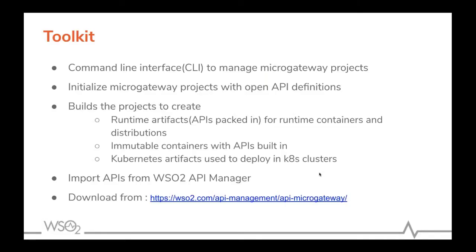The toolkit is a command-line interface for API developers to manage micro gateway projects. API developers can initialize micro gateway projects with standard OpenAPI definitions, then build the project to generate runtime artifacts and immutable containers or Kubernetes artifacts. The toolkit can also import APIs from the WSO2 API Manager publisher portal.